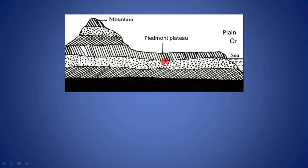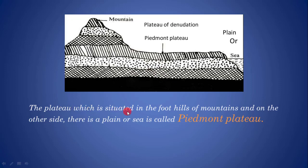This raised land area — the piedmont plateau — was once as high as the mountain. Later, different agents like wind, waves, and sun rays caused removal and thinning of the surface and reduced it to the foot level of the mountain. That's why the piedmont plateau is also known as a plateau of denudation. So the plateau which is situated in the foothills of mountains and on the other side has a plain or sea is called a piedmont plateau.